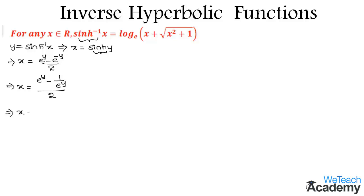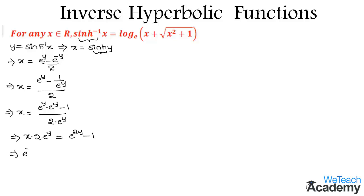By simplifying, we get x equal to e power y into e power y minus 1, divided by 2 into e power y. Transferring the denominator to the left hand side gives x into 2 into e power y equal to e power 2y minus 1. Transferring terms to the right hand side, we get e power 2y minus 2x times e power y minus 1 equal to 0. This equation is now in the form of a quadratic equation in terms of e power y.